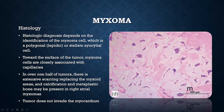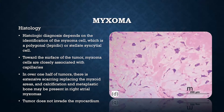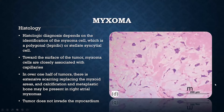Histopathologically, myxomas are diagnosed by the presence of the myxoma cell, which is a polygonal or stellate syncytial cell. Towards the center of the tumor, you can see calcification or even metaplastic bone. These tumors generally do not invade the myocardium. If you see one that does, it's much less likely — almost impossible — that it's a myxoma.